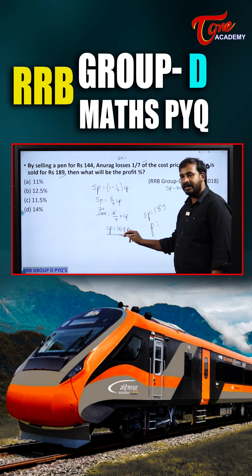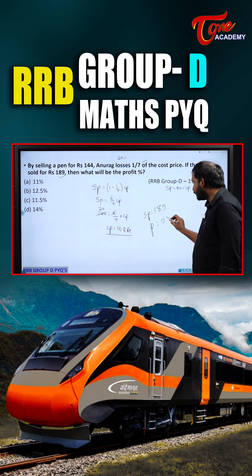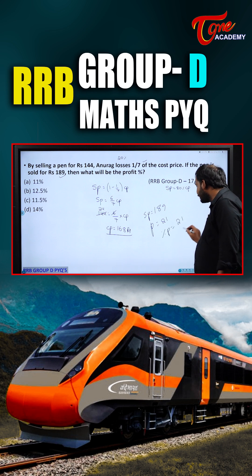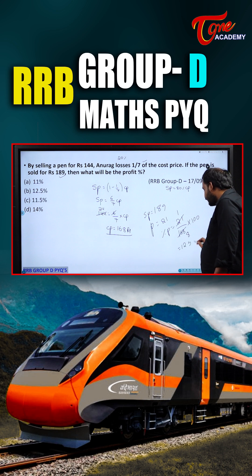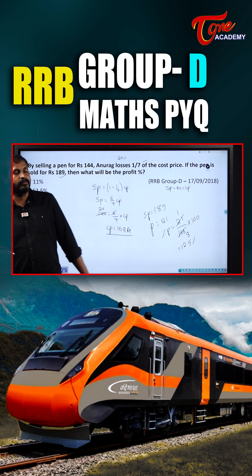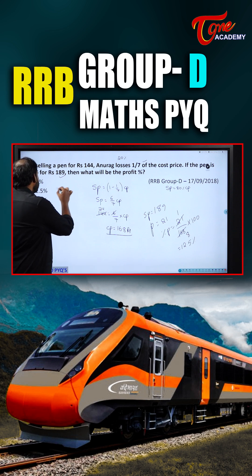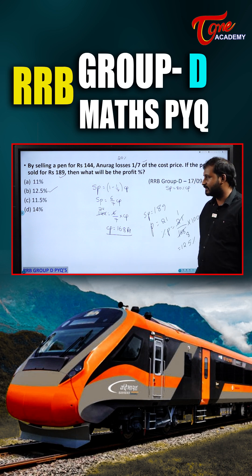Profit = 189 − 168 = ₹21. Percentage of profit = (21/168) × 100 = 100/8 = 12.5%. As we learned in the percentage concept, 100/8 equals 12.5.